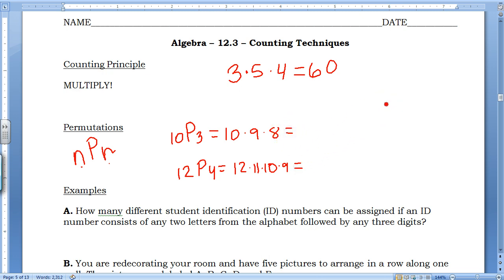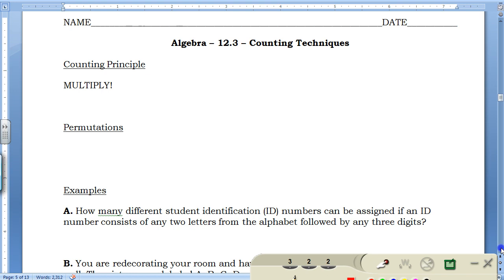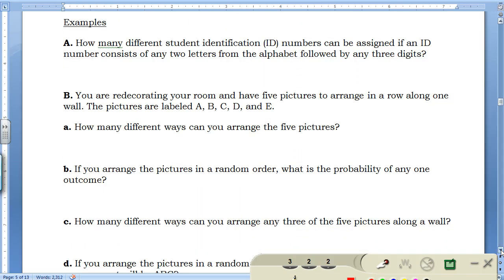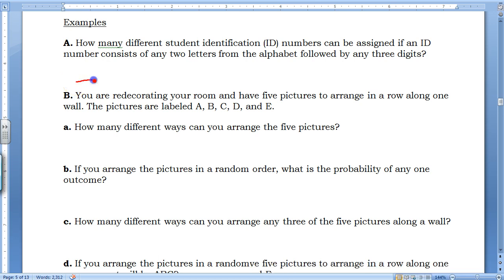So now we're going to do some examples that show us how to use these tools. The first example says how many different student identification numbers can be assigned if an ID number consists of two letters from the alphabet followed by three digits. So what I like to do for this is fill out some blanks of what I'm going to need. So I have two letters in the alphabet followed by three numbers.